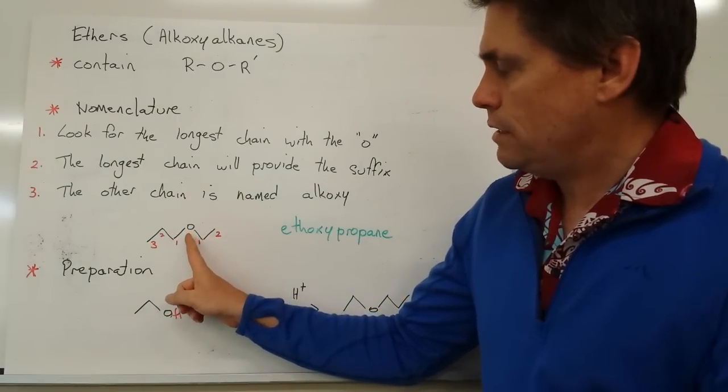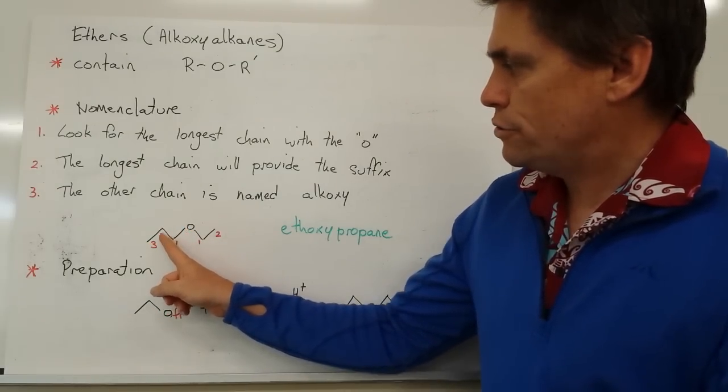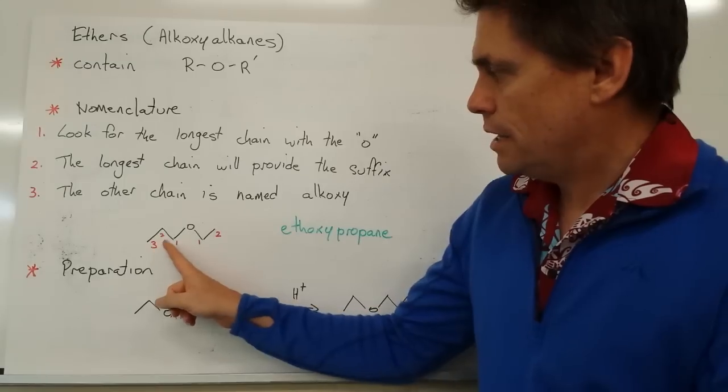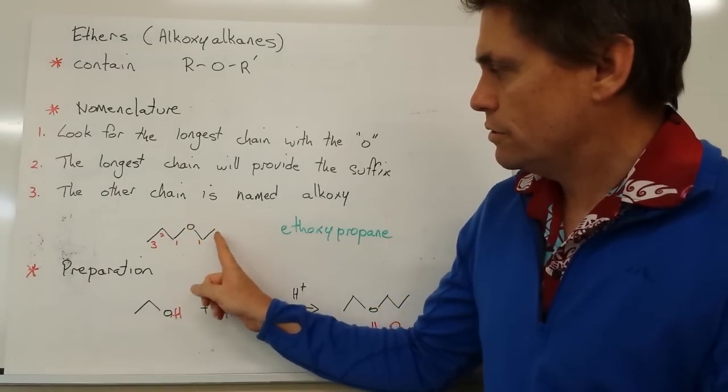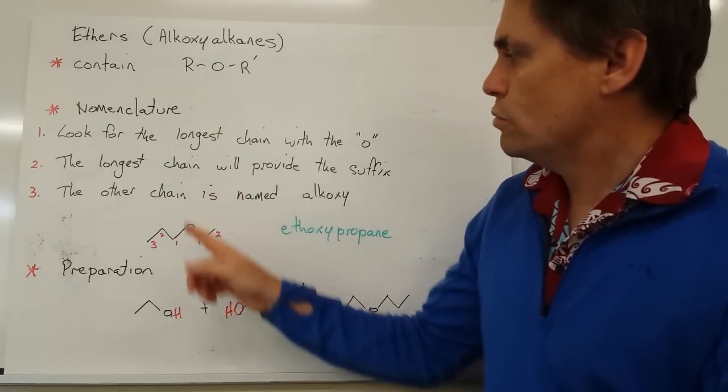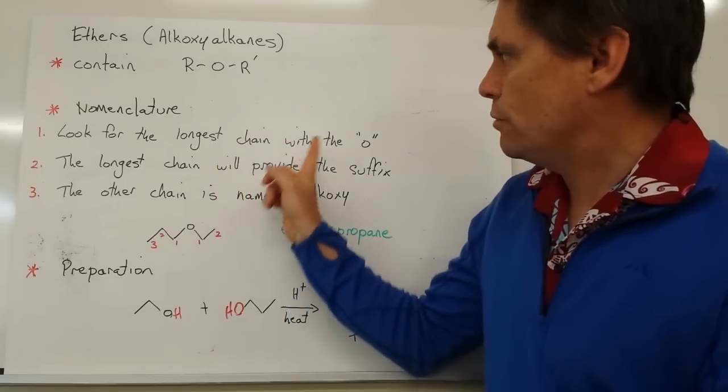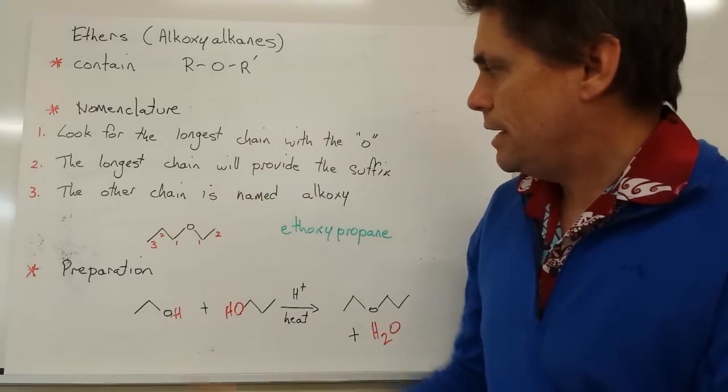that has off the oxygen one, two, three carbons, and we've got one at the other side that's got two carbons. So according to our rule, we choose the longest chain with the O connected to it. In this case